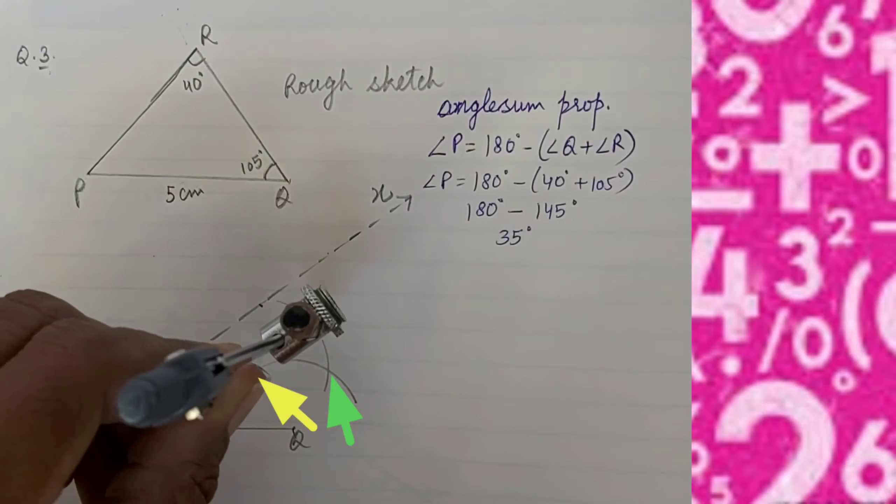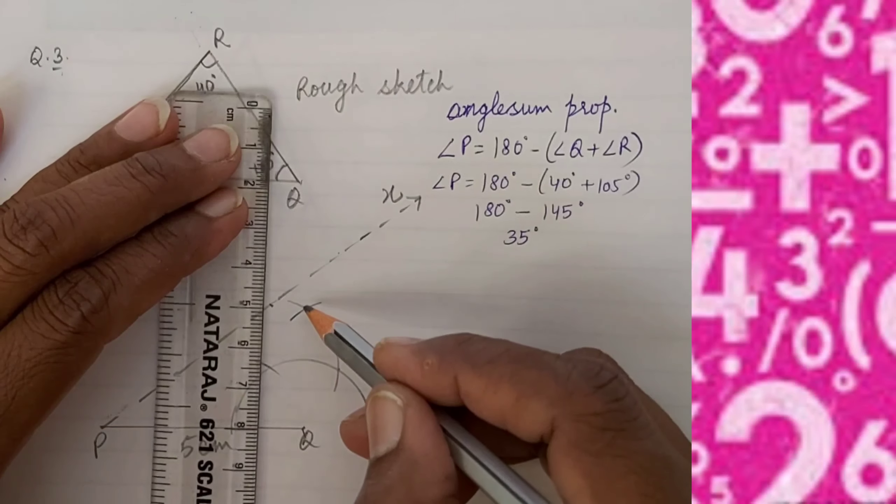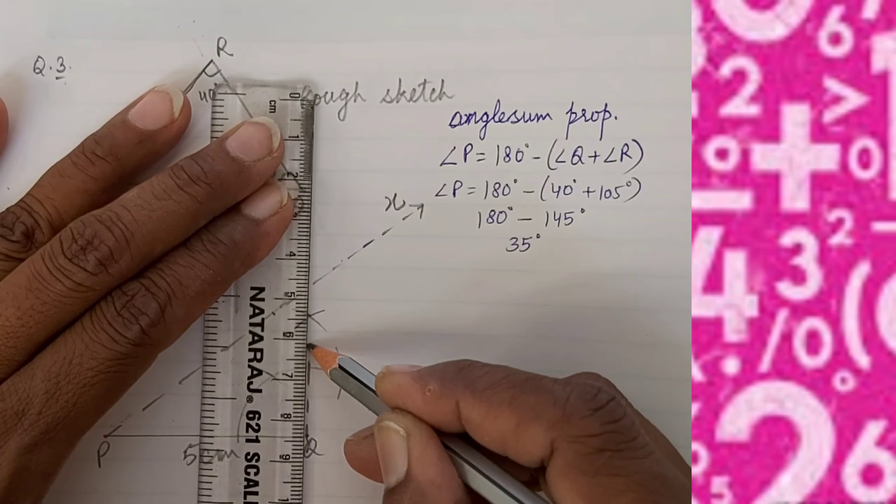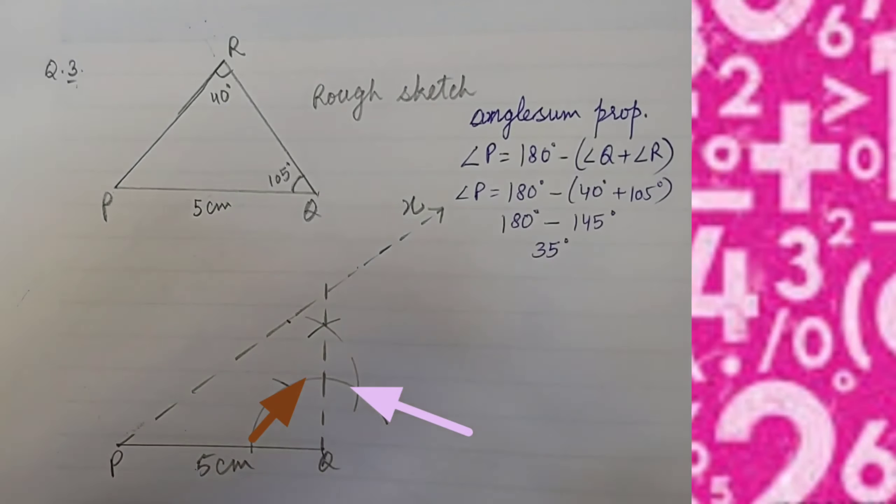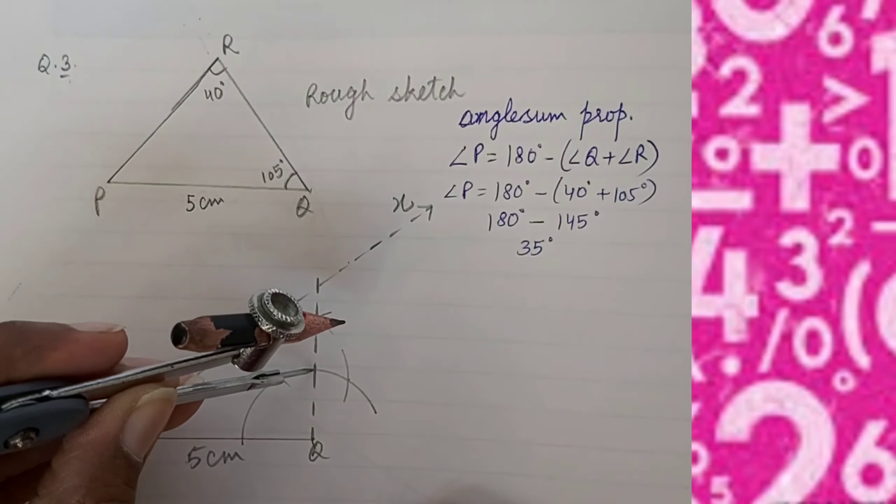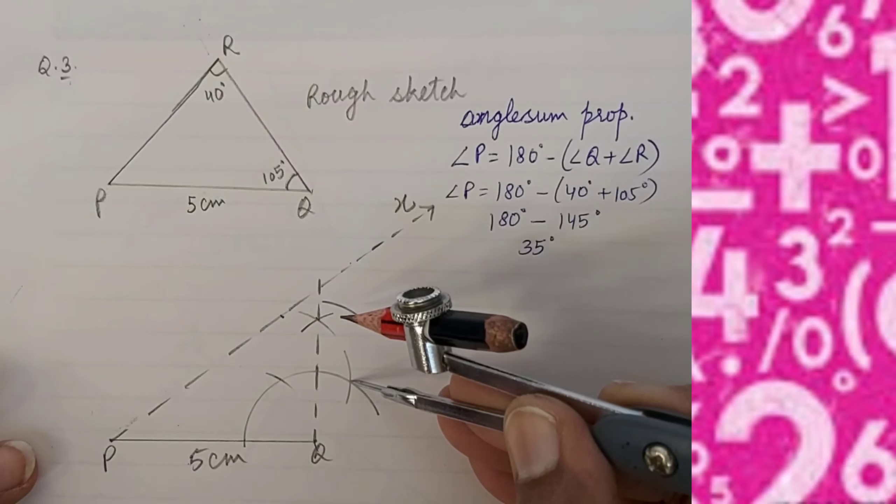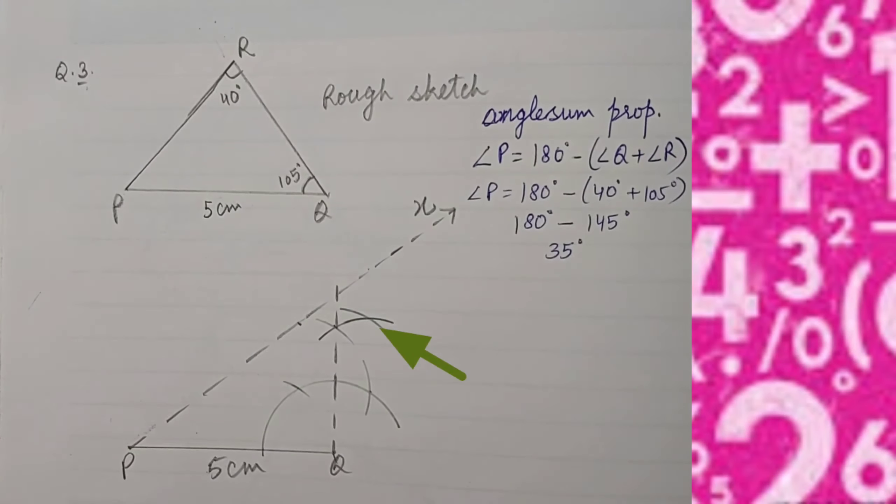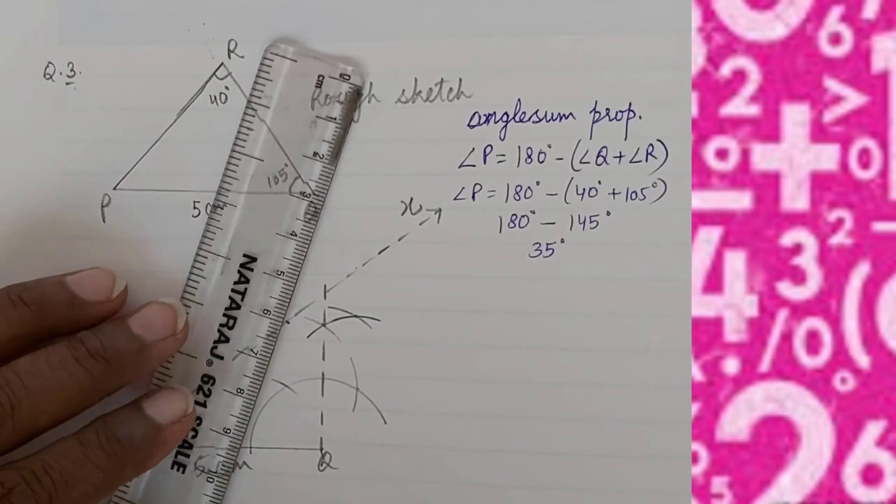With the help of 60 degrees and 120 degrees, we will draw 90 degrees. And with the help of 90 degrees and 120 degrees, cut arcs joining the intersecting point and Q. So we get a 105 degree angle.